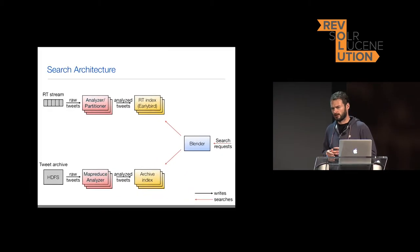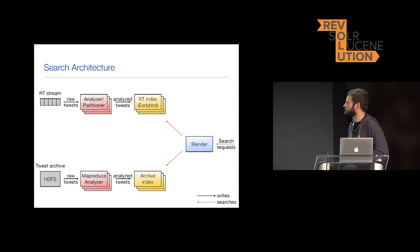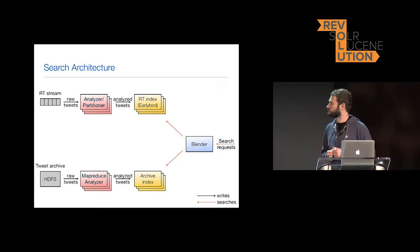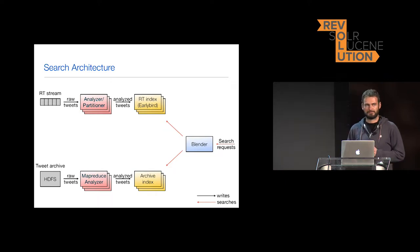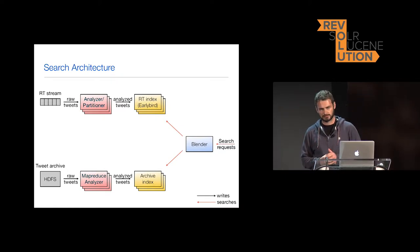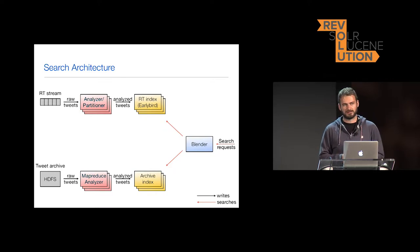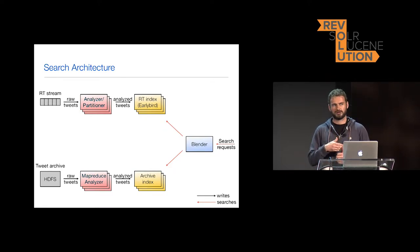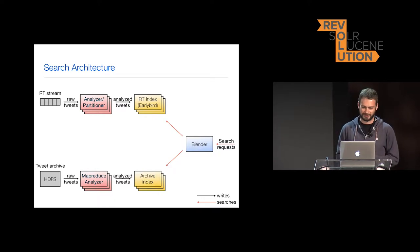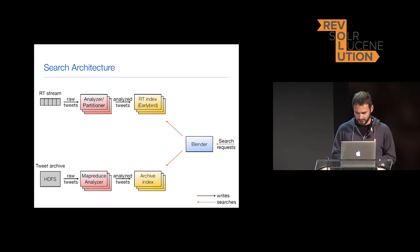I'll give a high-level overview of the architecture since we only have 30 minutes, then dive into some Lucene modifications. This slide is about tweet search — we also have user search at Twitter, but I'm focusing on tweet search. We have two different pipelines: one is for the real-time stream of tweets from the API. They are raw text, and we have a Lucene-based analyzer called Penguin, which is open source. The analyzed tweets get sent to our real-time index, code-named Early Bird.